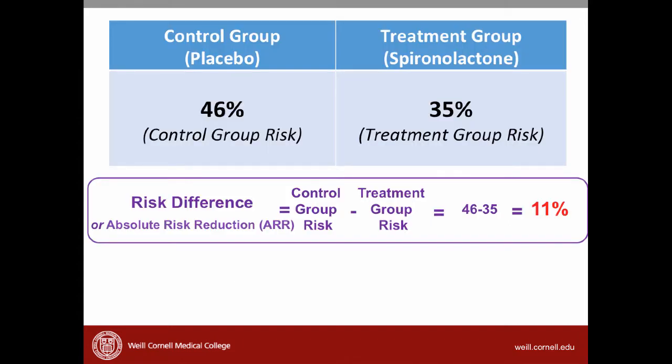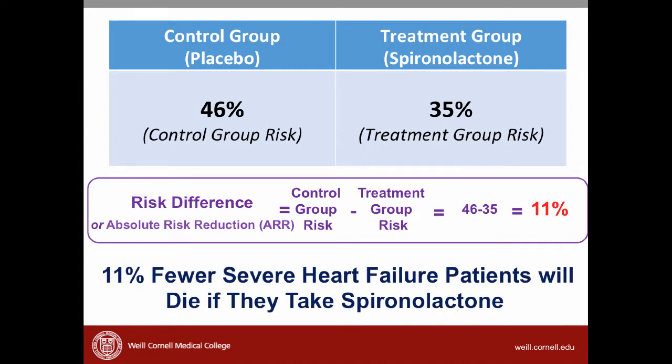Let's go back to our study and calculate the risk difference. If the control group risk was 46% and the treatment group risk was 35%, the risk difference or absolute risk reduction is simply 46% minus 35%, which is 11%. In plain language, we might say that 11% fewer severe heart failure patients will die if they take spironolactone. Both relative risk reduction and risk difference give us important and different information, and it's helpful to understand both to understand the treatment effect.